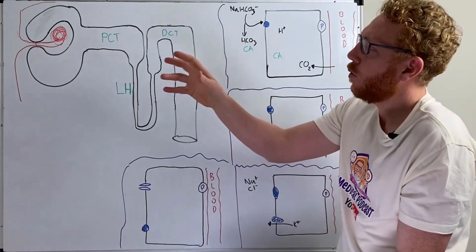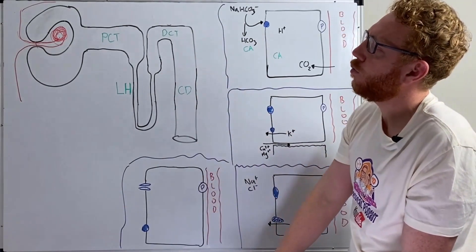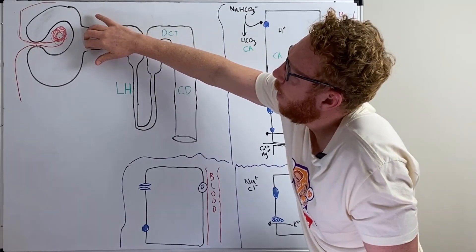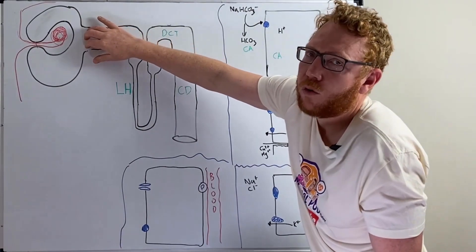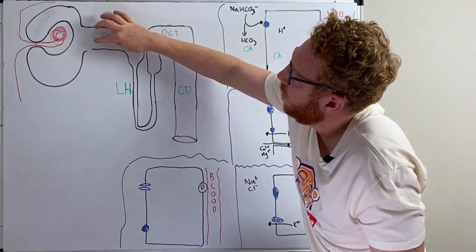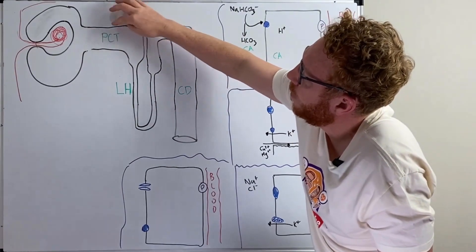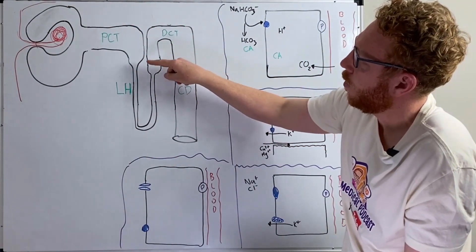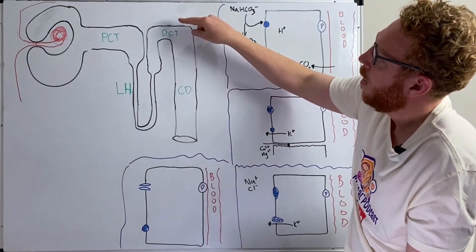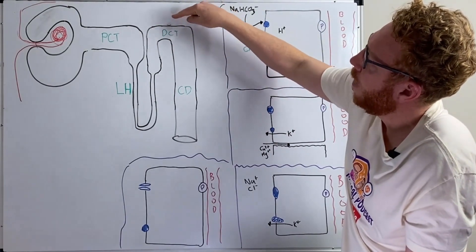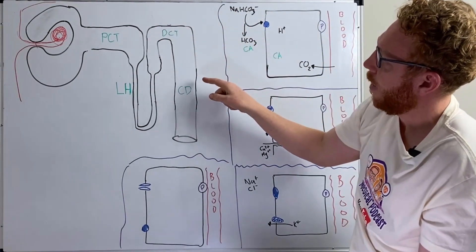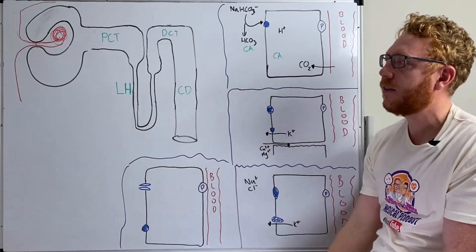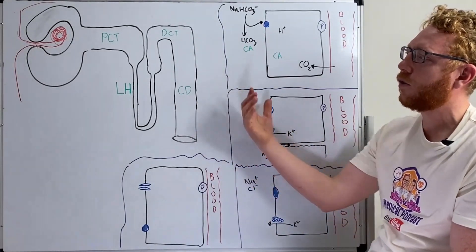Now with sodium, if all the sodium came out of your plasma and you wanted to reabsorb it all, about 65% would happen at the PCT, 15 to 20% would happen at the loop of Henle, about 10% would happen in the distal convoluted tubule, and about 1 to 5% occurs at the collecting duct. And this is essentially how these drugs will work.